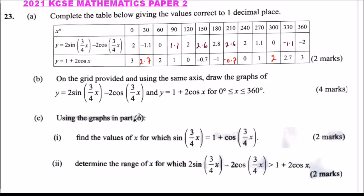Part C, Roman numeral one: using the graph in Part B, find the values of x for which 3sin(¾x) = 1 + cos(¾x). You get two marks for this.